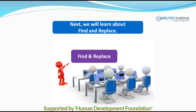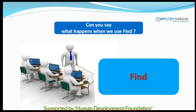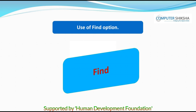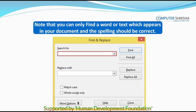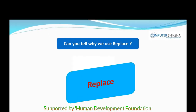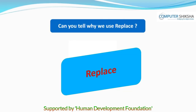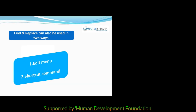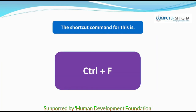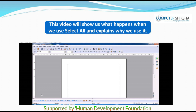Next, we will learn about Find and Replace. Can you say what happens when we use Find? By using Find, we can search our document for any text or word. Note that you can only find a word or text which appears in your document and the spelling should be correct. By using Replace, while doing a search, we can search for any word or text in our document and replace it with any other word or text. Find and Replace can also be used in two ways: from the Edit menu or by using the shortcut command Control plus F.